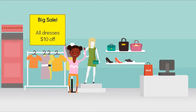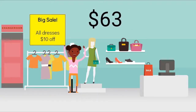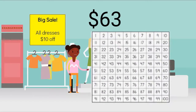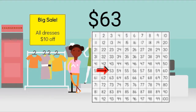The dress I like is $63. I can take $10 off that price because of the sale. I can use my hundreds chart to help me visualize 10 less than 63. If I start on 63, I know that the number on top of 63 is 10 less. How much will I have to pay for my dress?